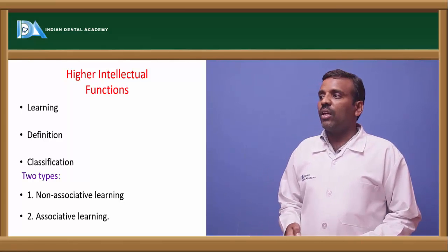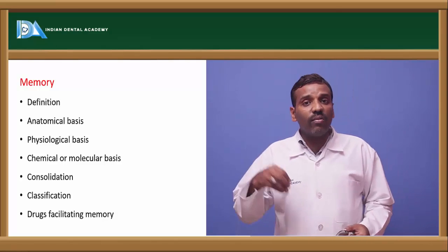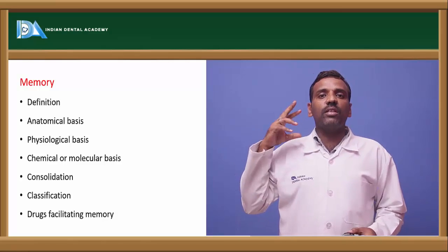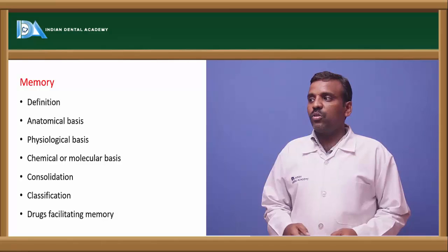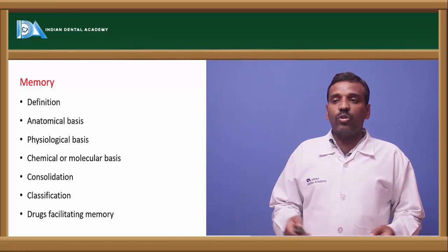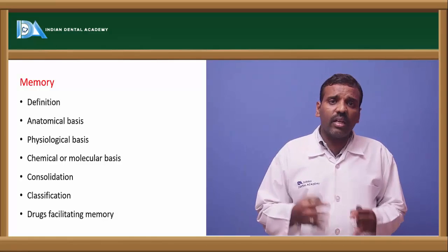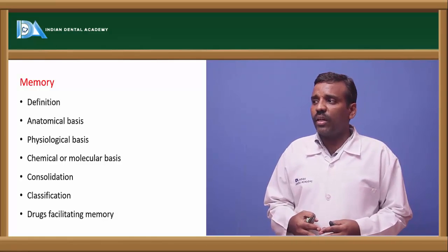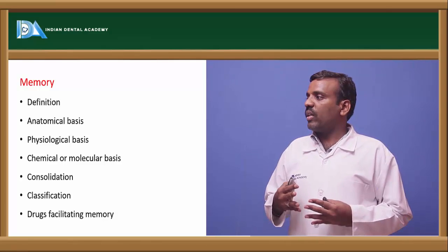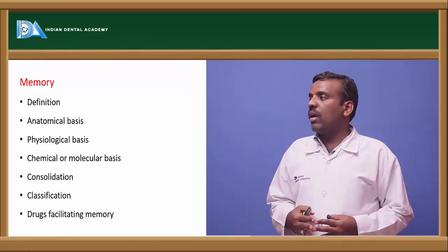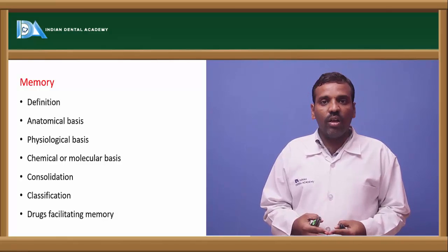Memory is the storage of whatever we have learned in the brain. It is classified on anatomical basis, physiological basis, chemical or molecular basis, and consolidation. Anatomical memory is based on what we see and observe; physiological memory is what we retain in mind while filtering out the rest; chemical memory is how the intellectual function is stored chemically.